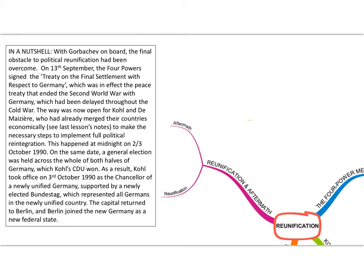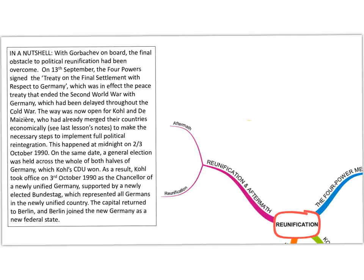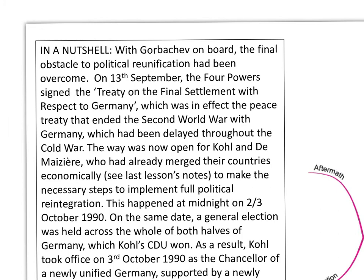The final strand: reunification and its aftermath. Gorbachev is now on board — that final obstacle has been overcome. It happened quickly: on the 13th of September the four powers signed the Treaty on the Final Settlement with Respect to Germany.